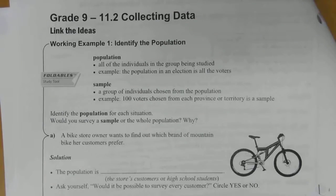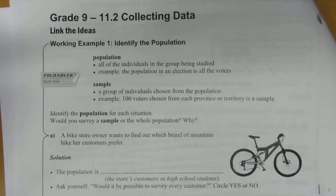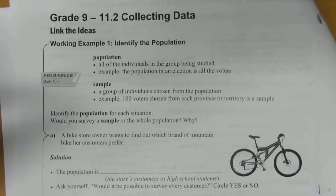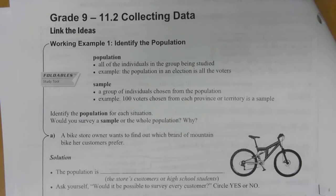Number two is about collecting data. Example one: identify the population. A few definitions here. Population is all of the individuals in a group being studied. For example, the population in an election is all of the voters — if you're a voter, you become part of that population. A sample is a group of individuals chosen from a population. For instance, if you chose 100 voters out of each province or territory, that would be considered a sample. It's not the whole group of voters — it's just a piece of it. So a sample is a section of the population.